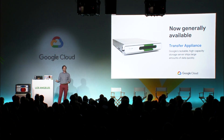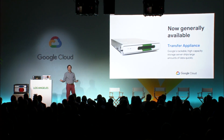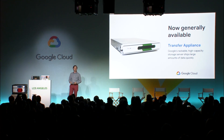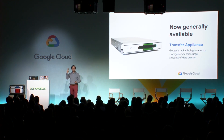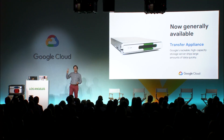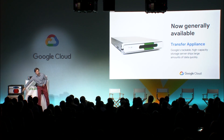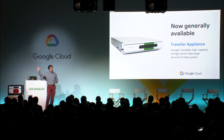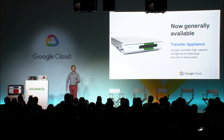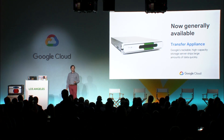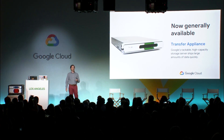Google Transfer Appliance is now generally available in the US to help you get petabytes of data to the cloud faster than on any other network. There are two options, as you can see here: we've got a 2U and a 4U with different capacities. The 2U is 100 terabytes, and the 4U is 480 terabytes of raw capacity.